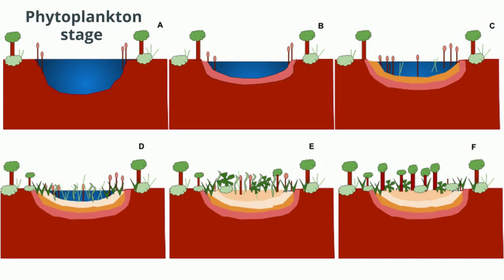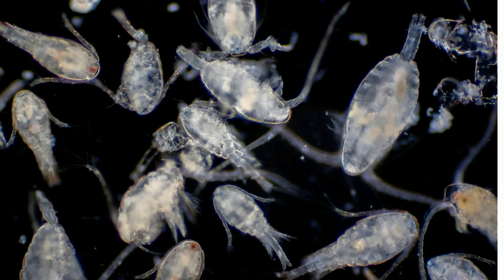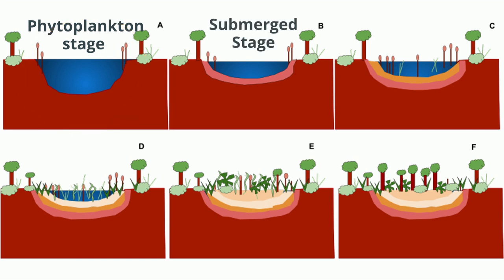Stage 1 – Phytoplankton Stage. Phytoplanktons are the pioneer colonizers. Their spores are carried by air to the pond. The phytoplankton are then followed by zooplankton, which settle down to the bottom of the pond after they die and decay, and begin to form soil. As this soil builds up, the pond becomes more shallow and further environmental changes follow.